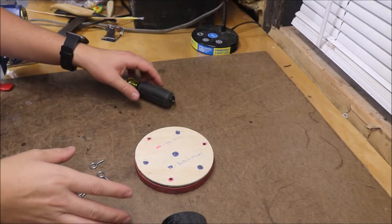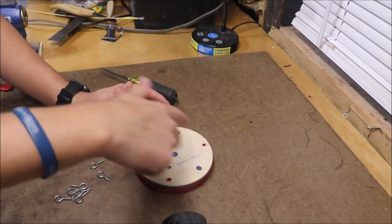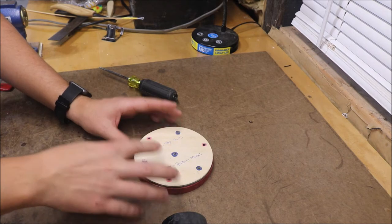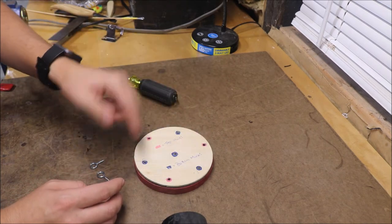So the next thing we're going to do is place our template, whatever one we used to trace it out, on top of our project and we're going to mark out the pink holes, which are going to be the top.